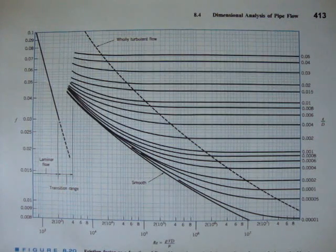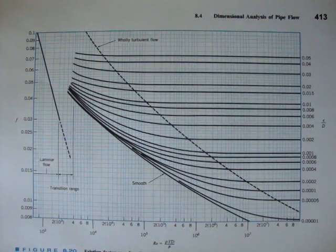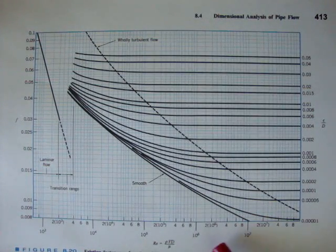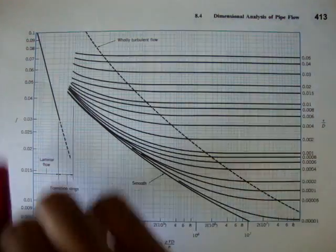But the Moody chart only applies to turbulent flow systems. So if you have a system and you figured out that the Reynolds number is greater than 2,000, you can use turbulent flow methods to figure out the values on this Moody chart.